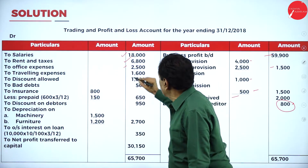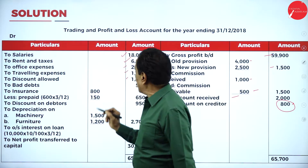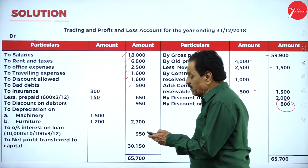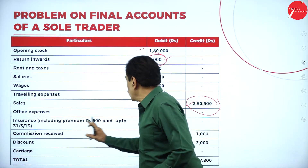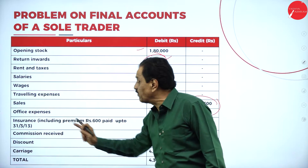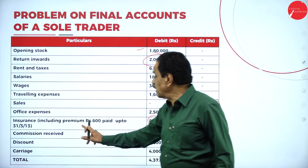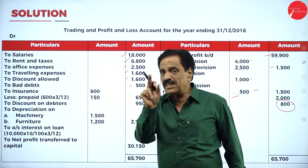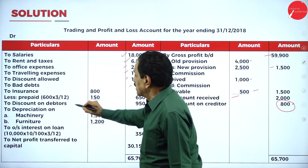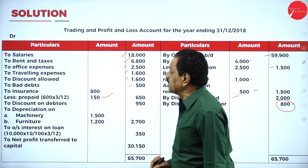Discount allowed is 1,600. Bad debt is 500. Insurance is 800 total, but it has been prepaid. The accounts close on 31st December; insurance was paid up to 31st March — that is 3 months more than needed. 600 per annum: for 3 months prepaid, that is 3/12 × 600 = 150. So only 650 is the actual expense chargeable.